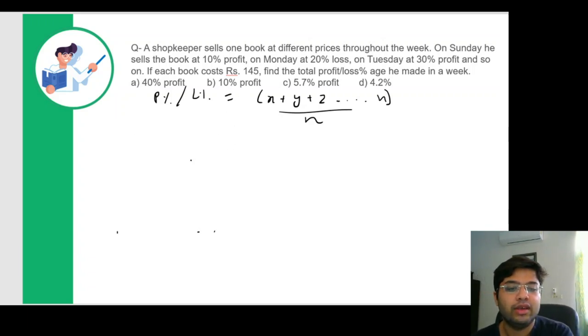So what we'll do is for every profit, we'll consider it as positive, but losses would be considered as negative. If the overall value when you add all these comes out to be negative, then it's a loss. If the overall value comes out as positive, it's a profit.